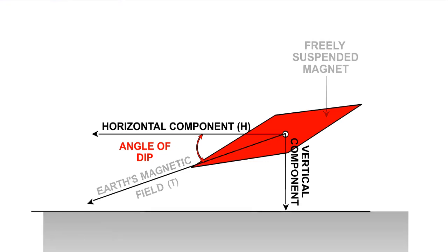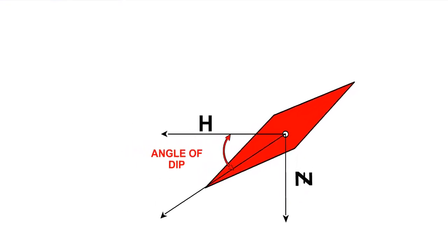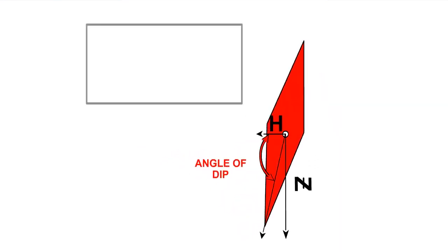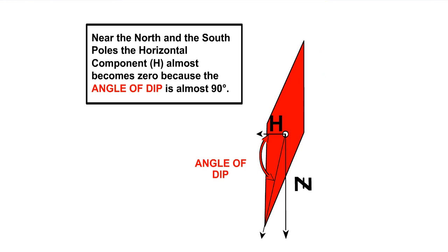The angle that the magnetic lines of force make to the horizontal is referred to as the angle of dip. This angle will be maximum at the magnetic poles and reduce as we move away from the poles.